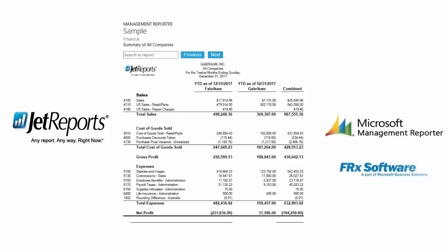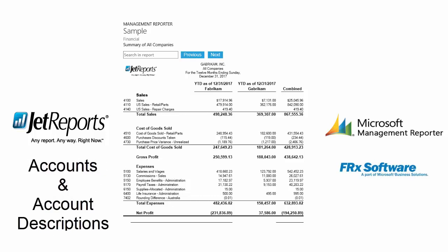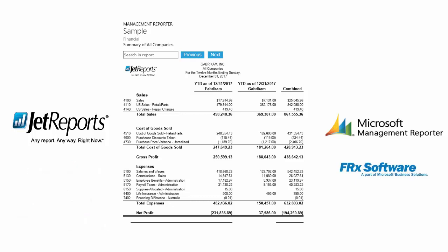If you are an FRx user, you'll be able to follow along, applying FRx to the comparison as Management Reporter and FRx use the same concepts. Because Jet Reports does not use a row component and reports are built as a whole, we'll simply add the GL account number and the corresponding account descriptions in Jet. We'll also be adding the row headers, lines, and subtotals for each product.